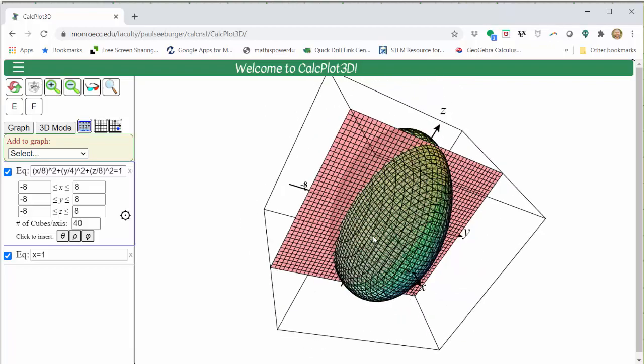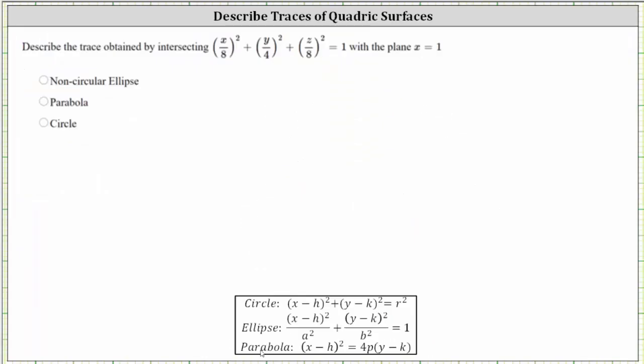Now let's verify these results algebraically. We already know the x equals one trace is a non-circular ellipse.